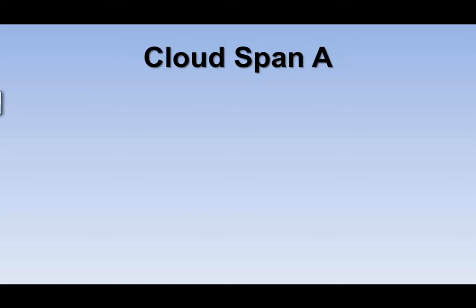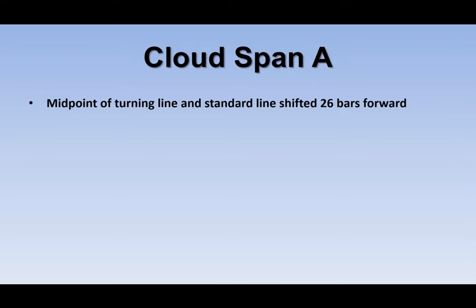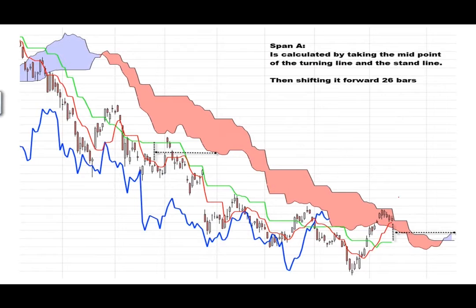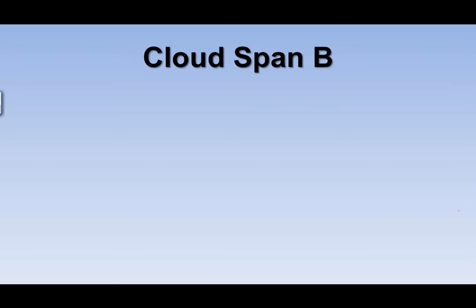The cloud is a little different. The price will tell you it's in an uptrend — buy all pullbacks — until the trend breaks, then it signals the new downtrend. There's a transitional period that's a little awkward, but it doesn't happen that often. Cloud Span A is the midpoint of the Turning Line and Standard Line shifted 26 bars forward. You take those two lines, find the midpoint, and project it 26 bars into the future — that gives you one edge of the cloud.